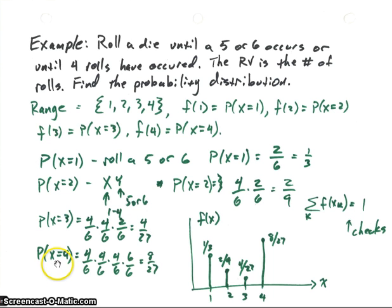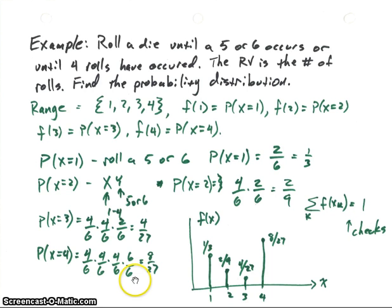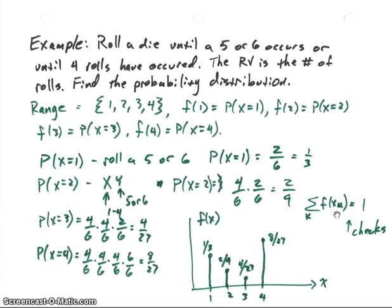Finally, the probability that x equals 4: we roll 1–4 on the first three rolls, and on the last roll we can get any value (1–6) since we stop at 4 rolls regardless, giving probability 1 for that final roll. Multiplying through, we get 8/27. The properties check out — all values are positive, and summing them all equals 1.